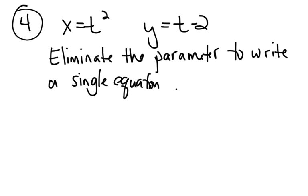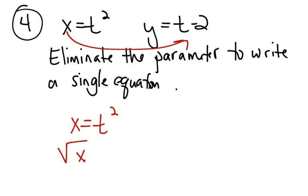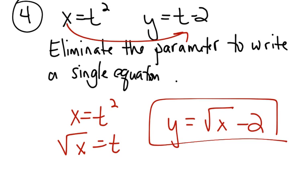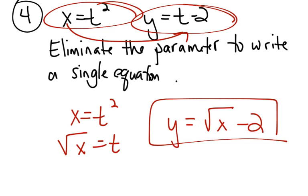You can start with two equations in parametric mode — x equals t squared and y equals t minus 2 — and rewrite as a single equation by eliminating the parameter. Solve for t: t is the square root of x. Therefore, write y equals the square root of x minus 2. If you graph this in parametric mode, you should get the exact same graph as y equals the square root of x minus 2.